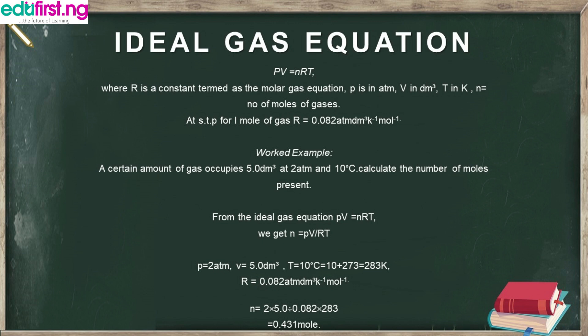We have many units for measuring pressure: Pascal, atmosphere, Newton per meter squared, and millimeter mercury. In the Ideal Gas Equation, P is in atmospheres, V is in dm³, T is in Kelvin, and n is the number of moles of gas. At STP for one mole of gas, R equals 0.082 atm·dm³·K⁻¹·mol⁻¹. This is a constant and does not change.